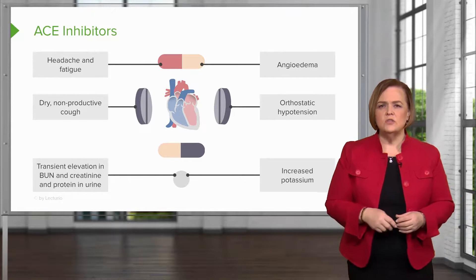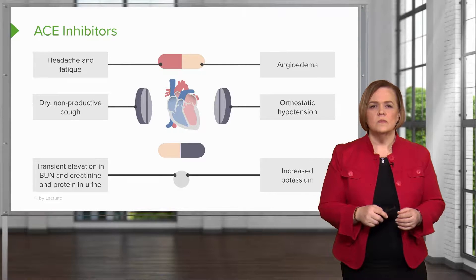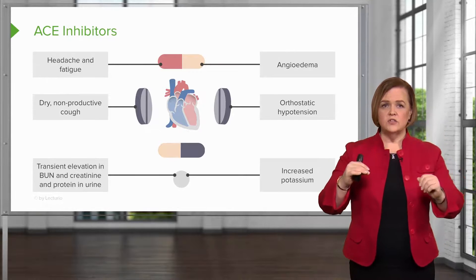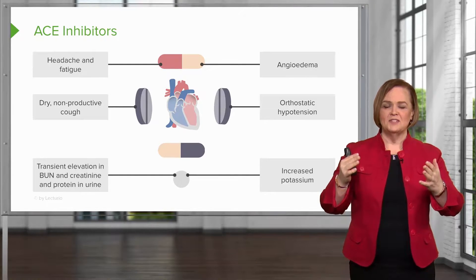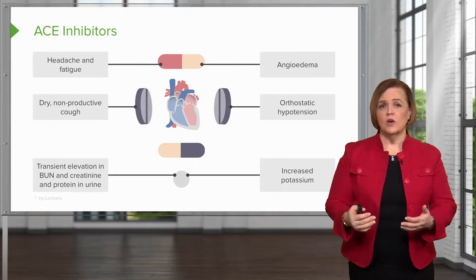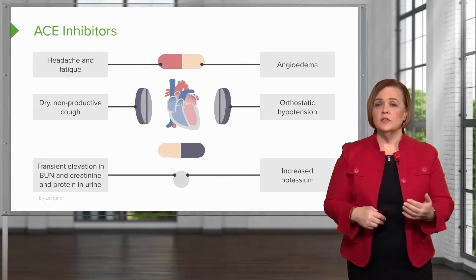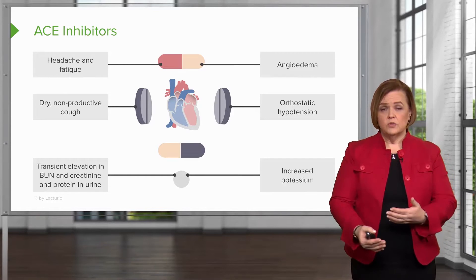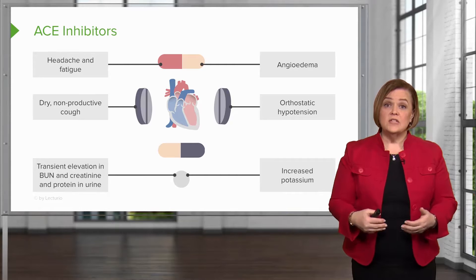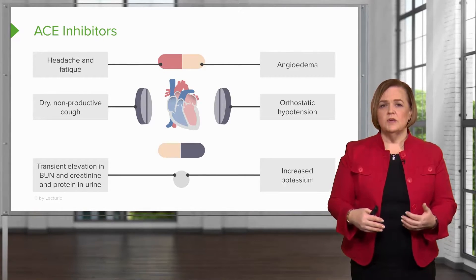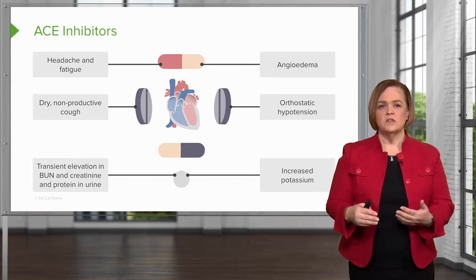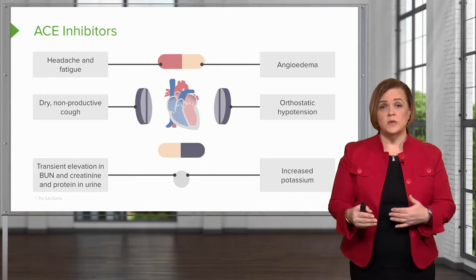Looking at the rest of the slide, we have headache and fatigue, angioedema, and cough — represented with tablets for lungs and a heart in the middle. Moving down to the bottom, there's a transient — meaning it comes and goes — elevation in BUN and creatinine and protein in the urine. BUN and creatinine are blood lab tests; if elevated, they tell us the kidneys are having problems. Protein in the urine — proteinuria — also indicates kidney problems because protein is supposed to stay in the bloodstream, not be excreted in urine. People on ACE inhibitors may have this come-and-go elevation of BUN, creatinine, and proteinuria.